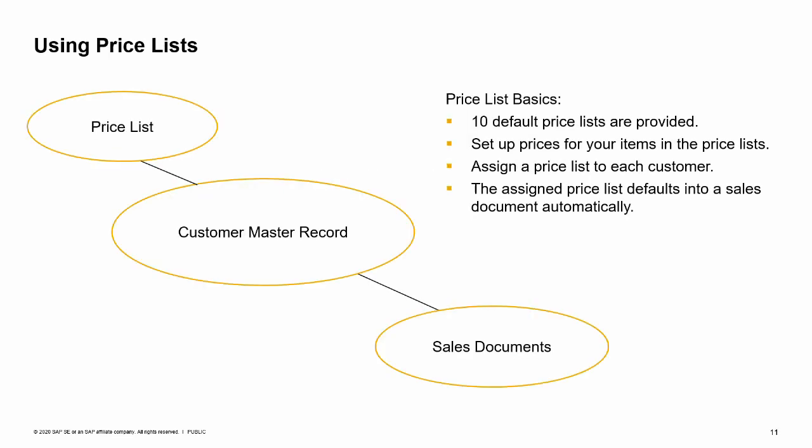When you enter an item into a sales document, a price is automatically found. SAP Business One provides 10 default price lists. You then set up prices for each price list for your items. You do not have to use all 10 price lists, but they are provided so that you can offer different prices to different groups of customers. You assign a price list to each customer via default payment terms, though the price list can be changed in the customer master. When you enter the customer in a sales document, the assigned price list defaults to the sales document automatically, and the system will use the price list to price the items in the order.